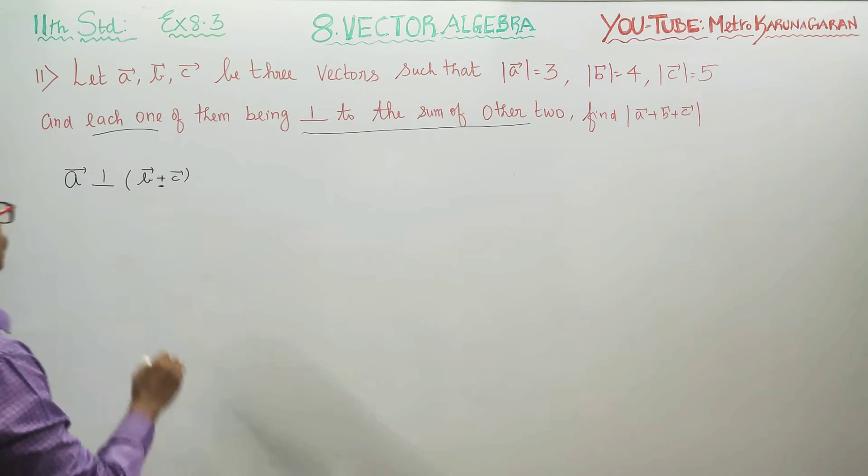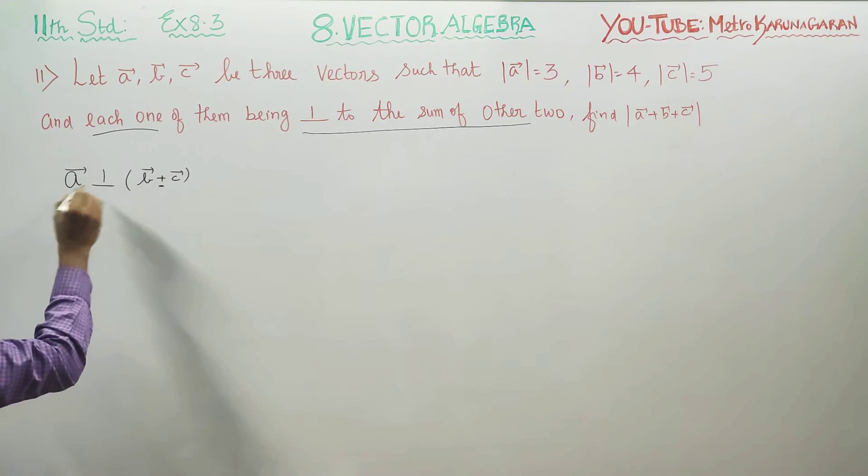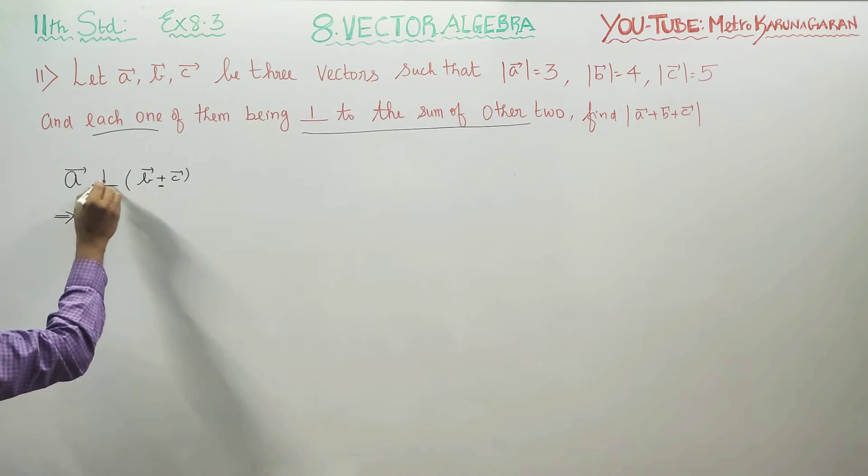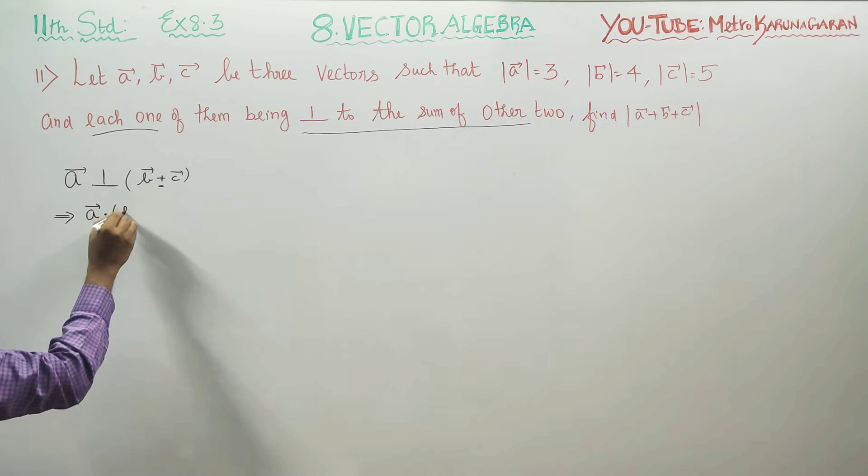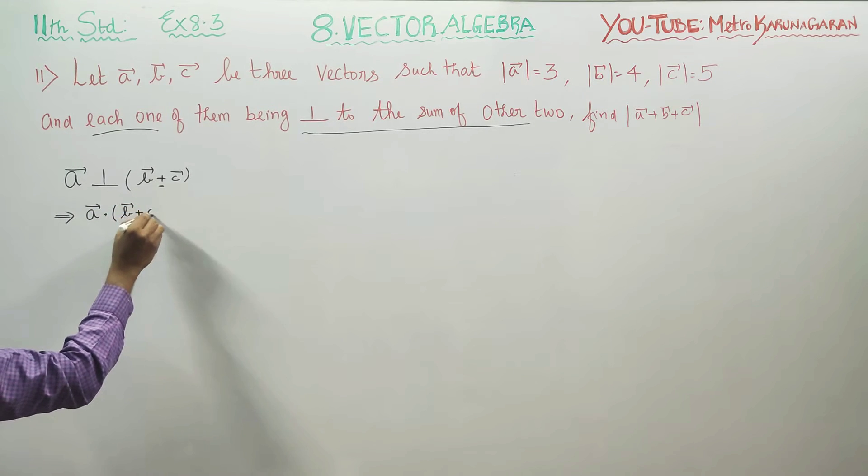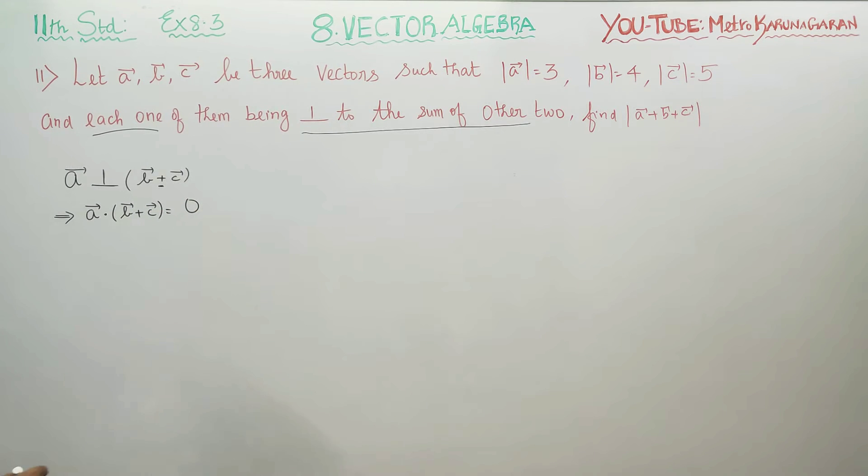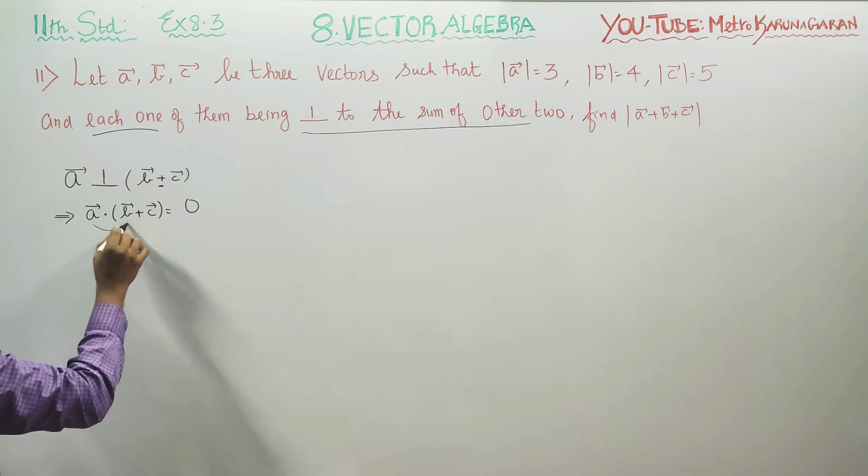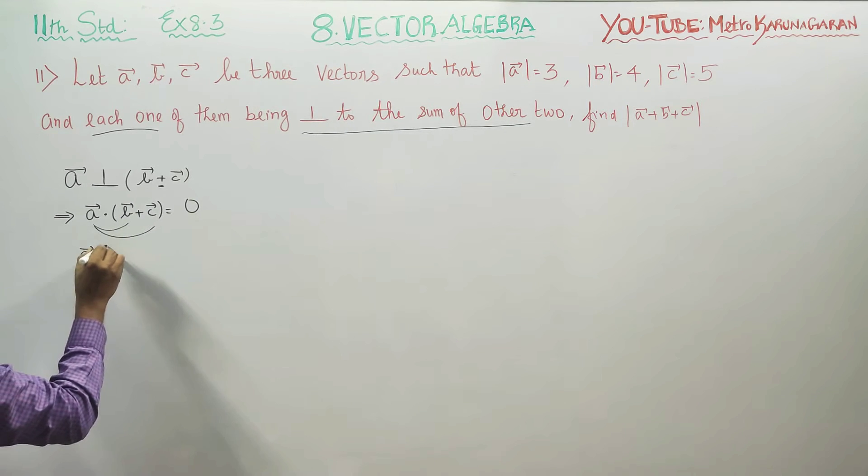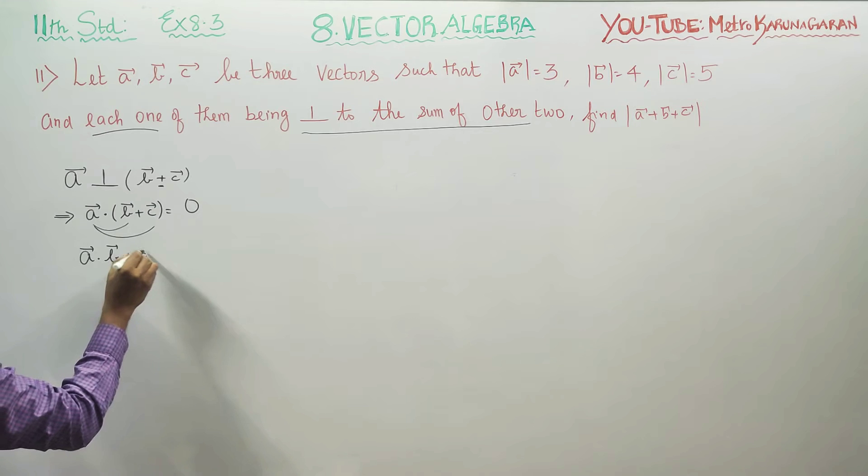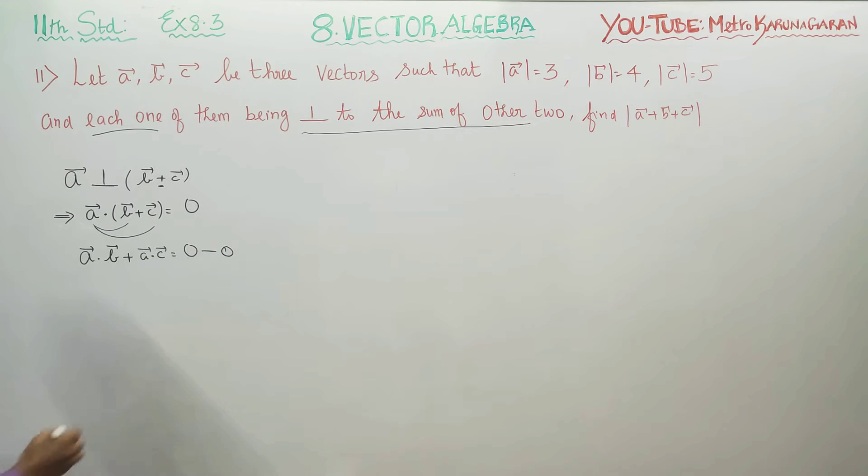What is the meaning of perpendicularity? In dot product, perpendicular means if you find the dot product, then the answer will be 0. A dot (B plus C) is equal to 0. Dot product is distributive. You can see A vector dot B vector plus A vector dot C vector is equal to 0. This is result number 1.